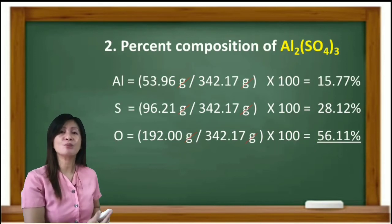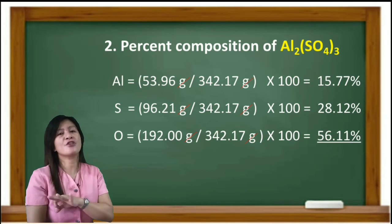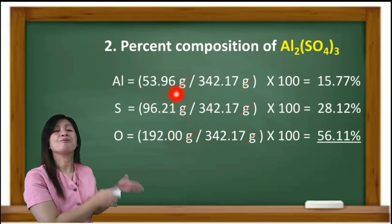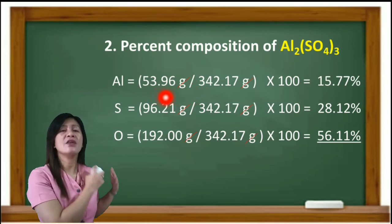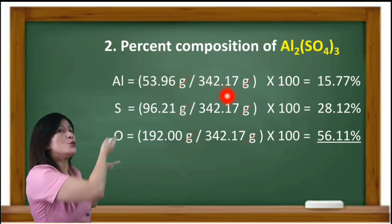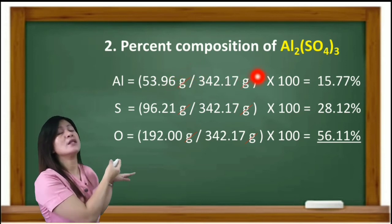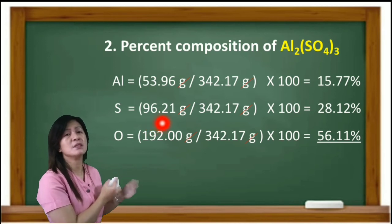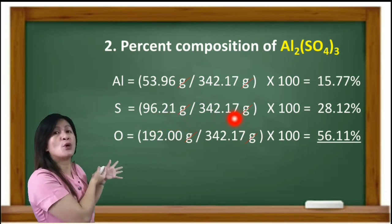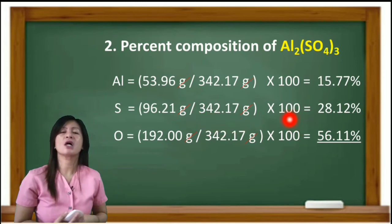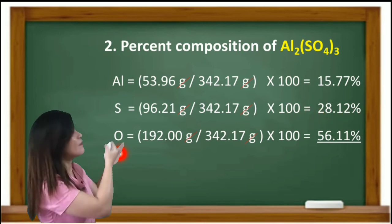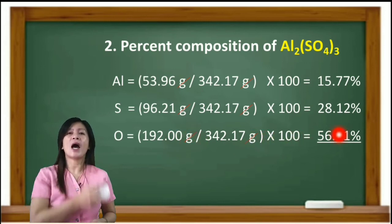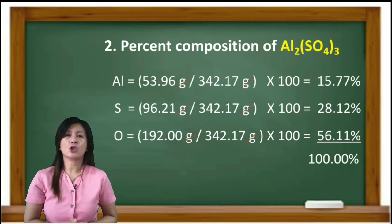Step two — percent composition for aluminum sulfate: for aluminum, 53.96 g ÷ 342.17 g × 100 = 15.77%. For sulfur, 96.21 g ÷ 342.17 g × 100 = 28.12%. For oxygen, 192 g ÷ 342.17 g × 100 = 56.11%. Adding the three percentages gives 100%.